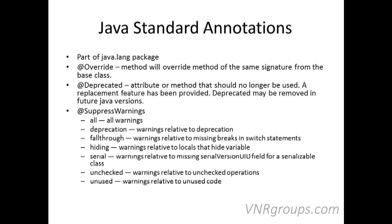Java provides some standard annotations. If you have a class that inherits from another class and a method that overrides a base class method in the derived class, you can put the @Override annotation just before the definition of the derived class method to indicate that your method is overriding a method defined in the base class. There is also an annotation called @Deprecated. Once you use @Deprecated, it means that method or attribute can no longer be used — future versions of Java may not support it, and you are discouraged from using it.